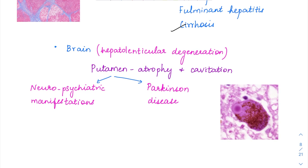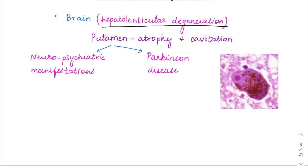Copper deposition can also happen in the brain, specifically in the basal ganglia, especially in the putamen region. In the putamen, it causes atrophy and cavitation, called hepatolenticular degeneration—hepato for liver, lenticular for basal ganglia. This results in neuropsychiatric manifestations: extrapyramidal symptoms like rigidity, confusion, involuntary movements, lack of coordination, along with psychiatric manifestations.